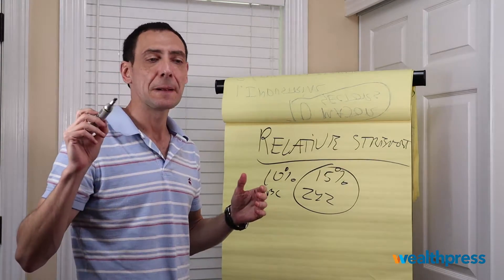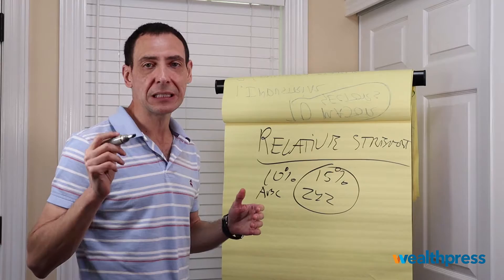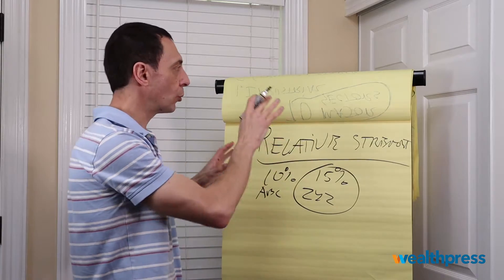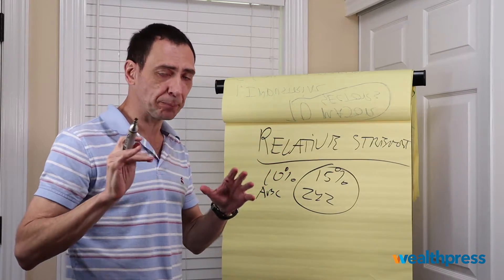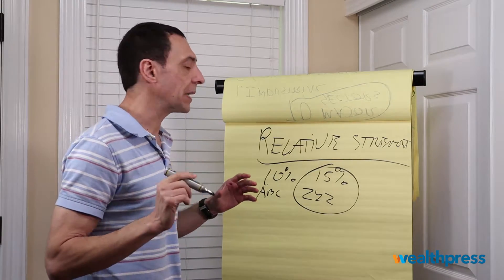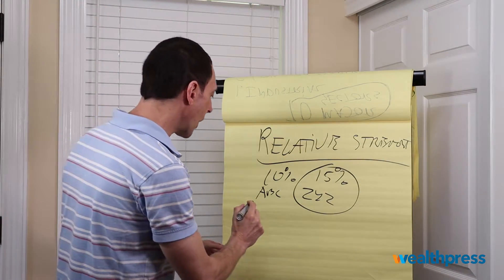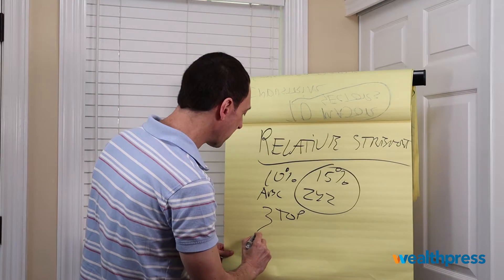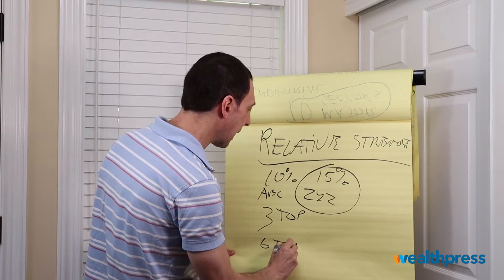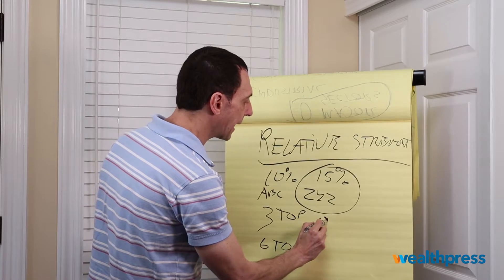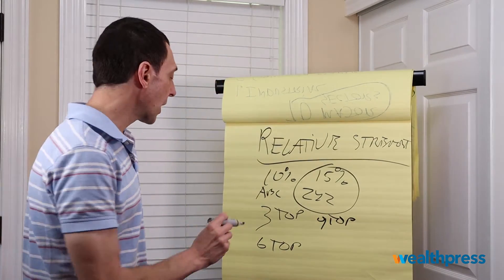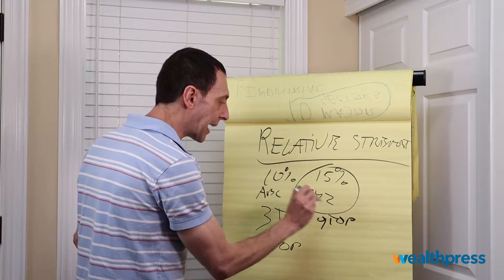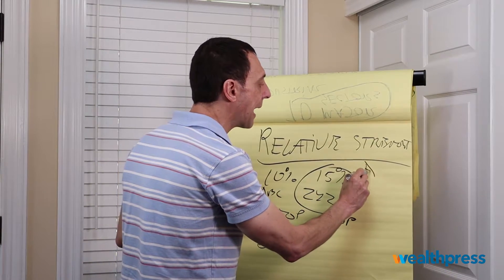The discretionary consumer, the retail, the technology, the energy — all of the top 10. You want to analyze them, you want to rank them. You want to rank them on three-month top relative strength, six-month top, and nine-month top. Then, once you have the three-month high of the highest relative strength, the six-month high, and the nine-month high, you average them.